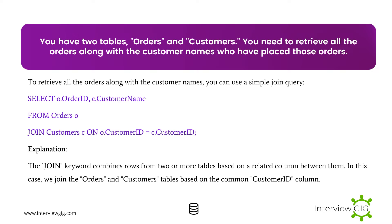Next Scenario: You have two tables, Orders and Customers. You need to retrieve all the orders along with the customer names who have placed those orders. To retrieve this, you can use a simple JOIN query. The JOIN keyword combines rows from two or more tables based on a related column. In this case, we join the Orders and Customers tables based on the common Customer ID column.